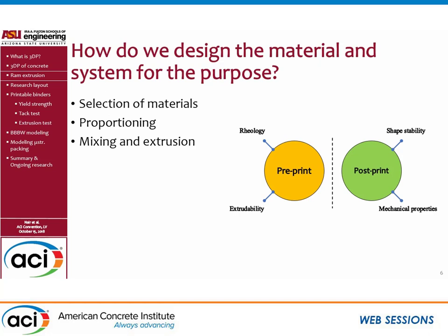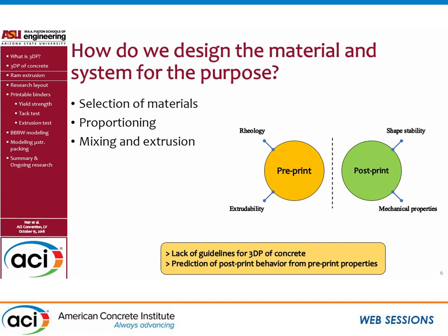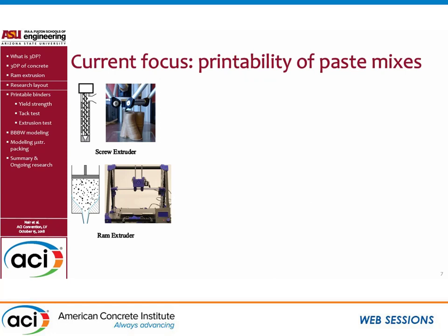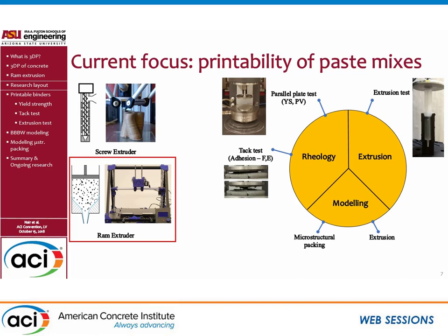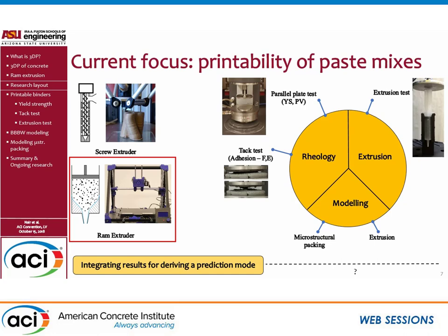We can broadly divide properties into pre-print and post-print. Pre-print properties of the material can be evaluated using rheological and extrusion characterization techniques, whereas post-print depends on shape stability and mechanical properties. There is a lack of guidelines for deciding these materials, and we try to predict post-print behavior using pre-print properties. Our research approach is divided into three areas: rheology, extrusion, and simulated microstructural packing parameters — which we relate to rheological and extrusion characteristics to determine if a material is printable. For rheology, we focus on parallel plate test and tack test; for extrusion, we use a lab-scale ram extrusion setup.